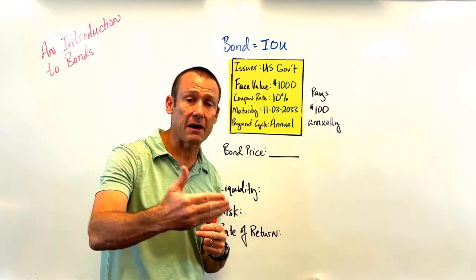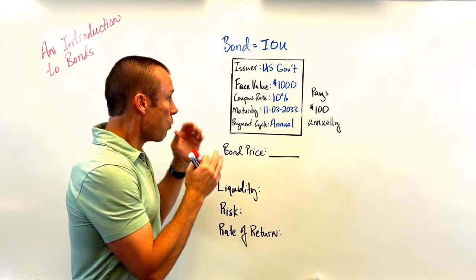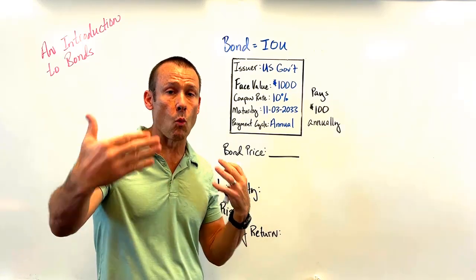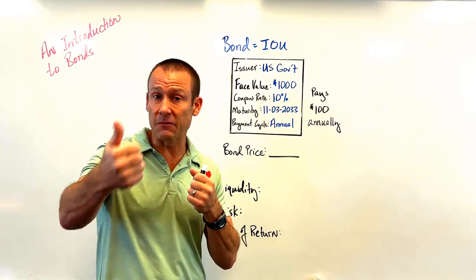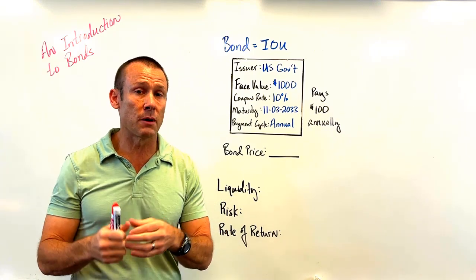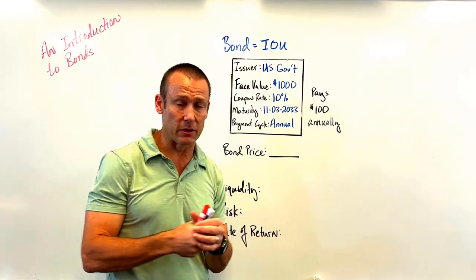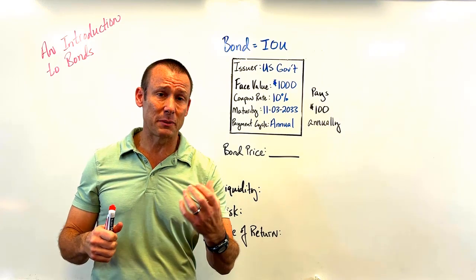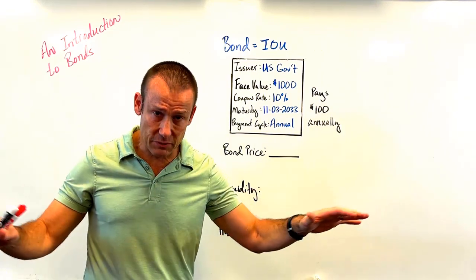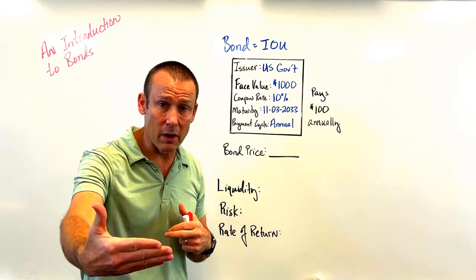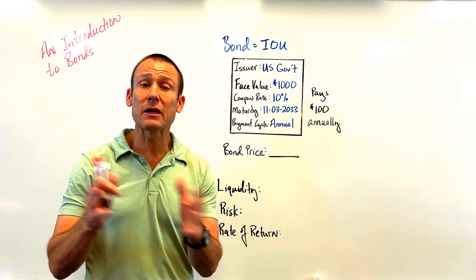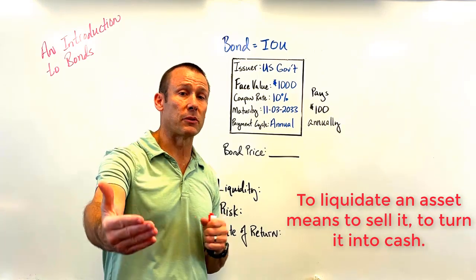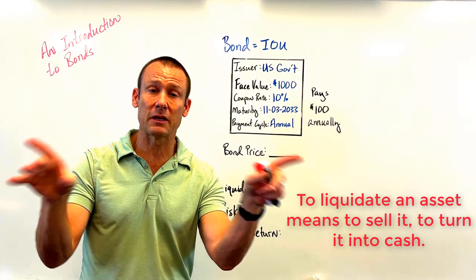One of the reasons a corporation or government issues bonds is they don't want to borrow all their money from one entity. Usually if you're going to issue bonds, it's because you want to borrow a lot of money. If you borrow from one entity, they're probably going to charge a higher interest rate, and it would be more difficult for that entity to liquidate their position. But if you issue bonds to a bunch of different people, it's going to be easier for them to sell off that position and get cash.